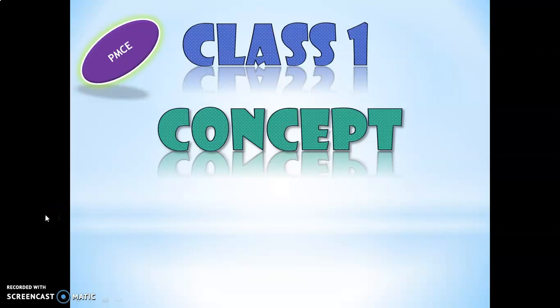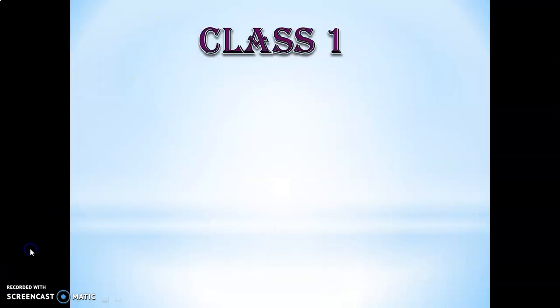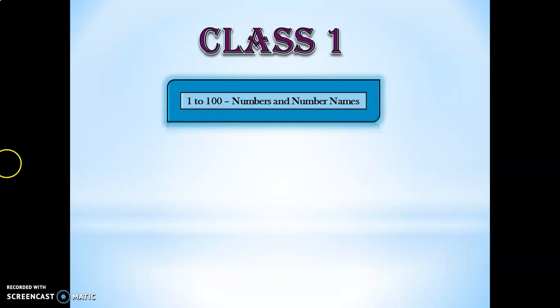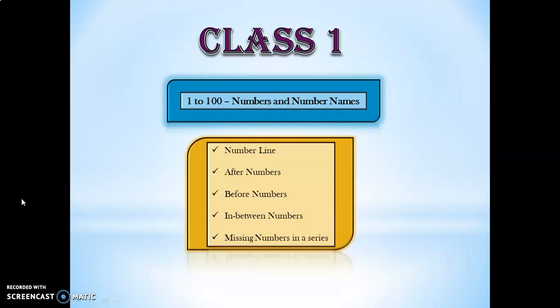Hello viewers, welcome back to my YouTube channel PMCE — Primary Mathematics Concepts Evolution. This video is a continuation of the learning outcome in Class 1 with respect to the concept of numbers. In the first part of the video, we tested the children with some interesting questions on the topic of 1 to 100 numbers and number names. In this video, we will be testing the children on number line, after numbers, before numbers, in-between numbers, and missing numbers in a series.